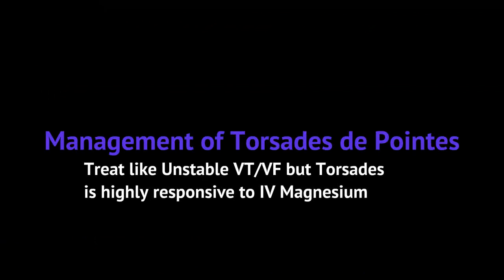Torsades should be treated like unstable ventricular tachycardia and ventricular fibrillation. But remember, torsades is highly responsive to IV magnesium. So if you recognize this rhythm on an EKG, you should follow the same ACLS protocol used for any unstable rhythm, but also consider giving IV magnesium to help break the patient from the rhythm.